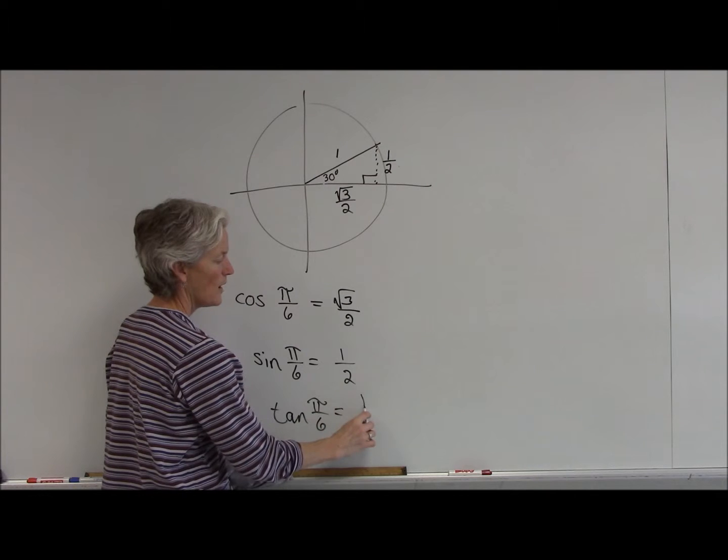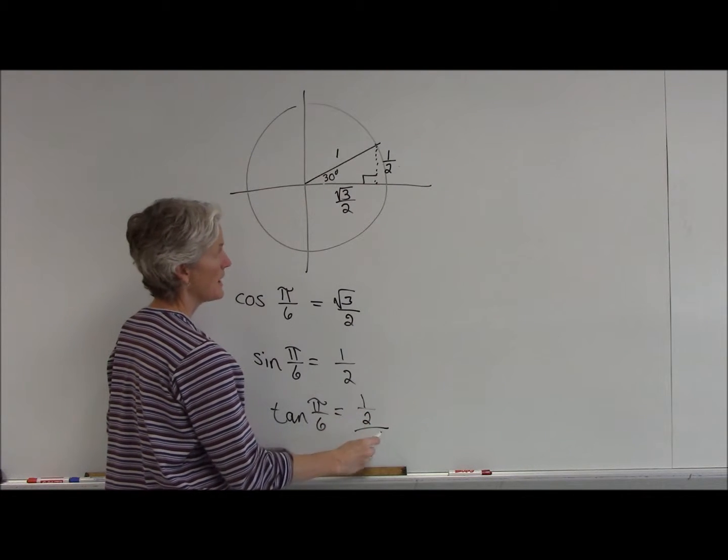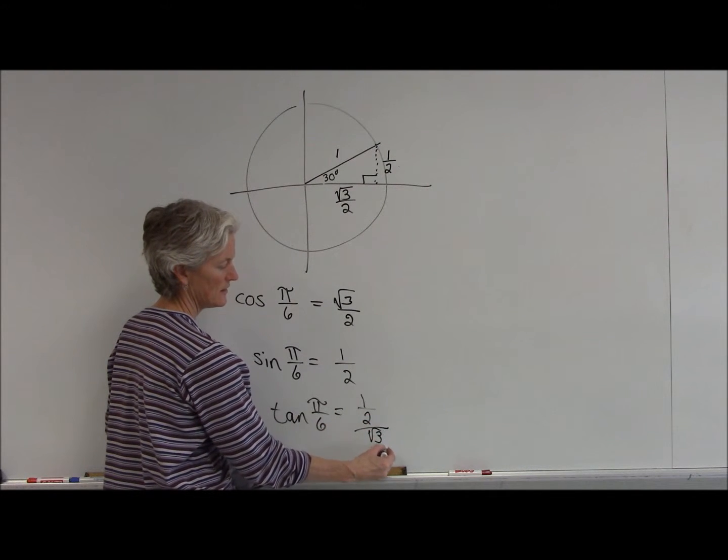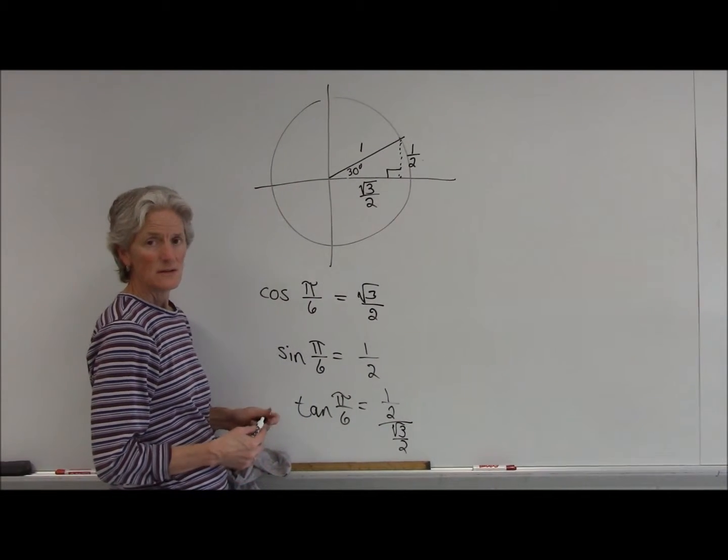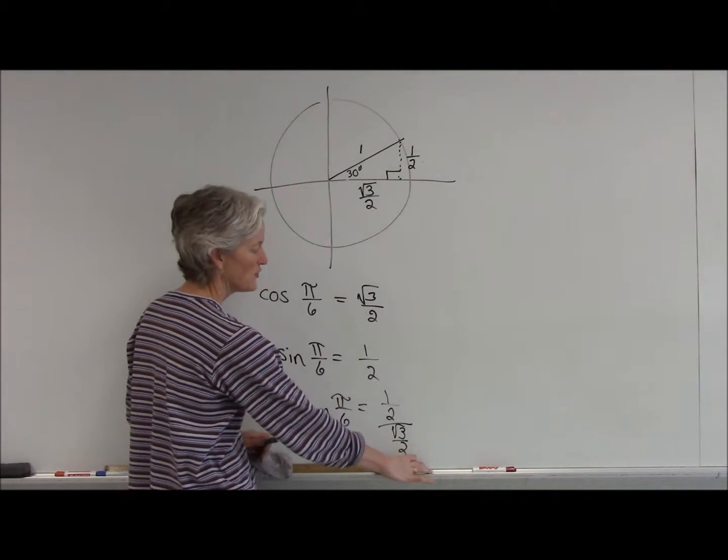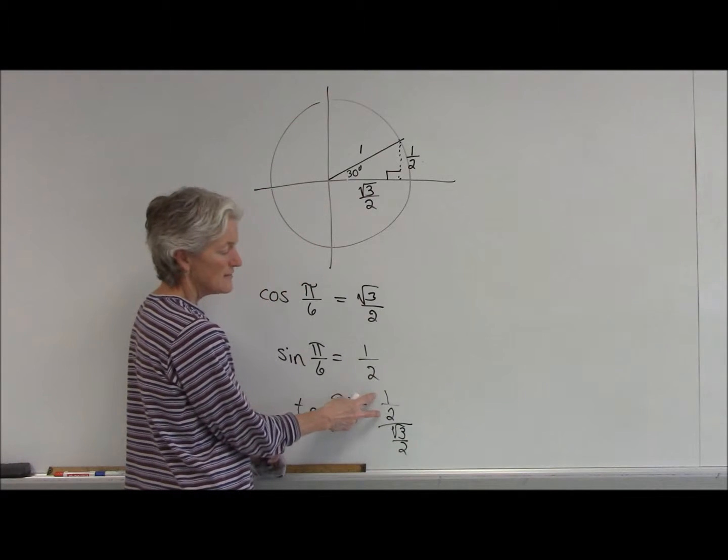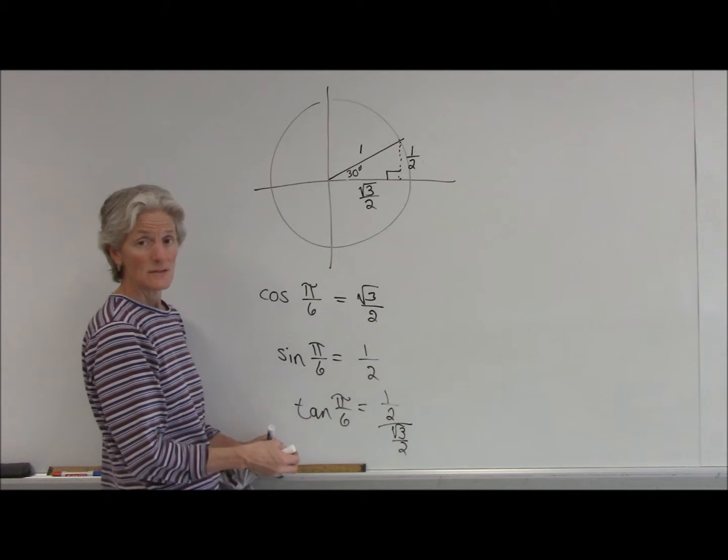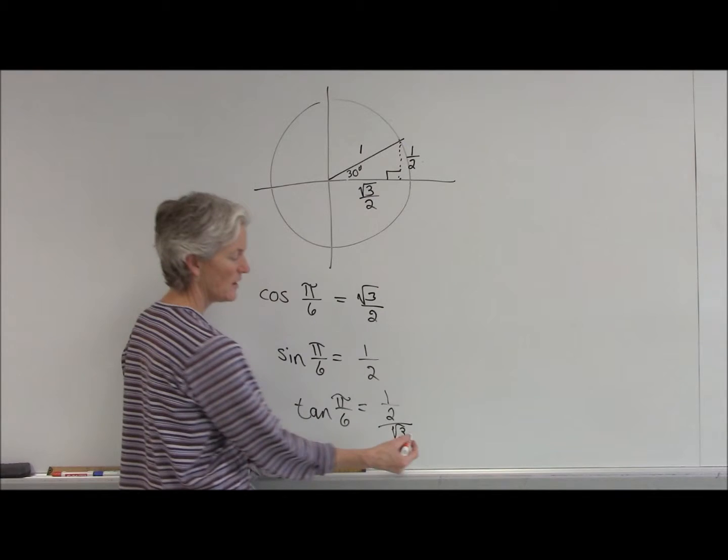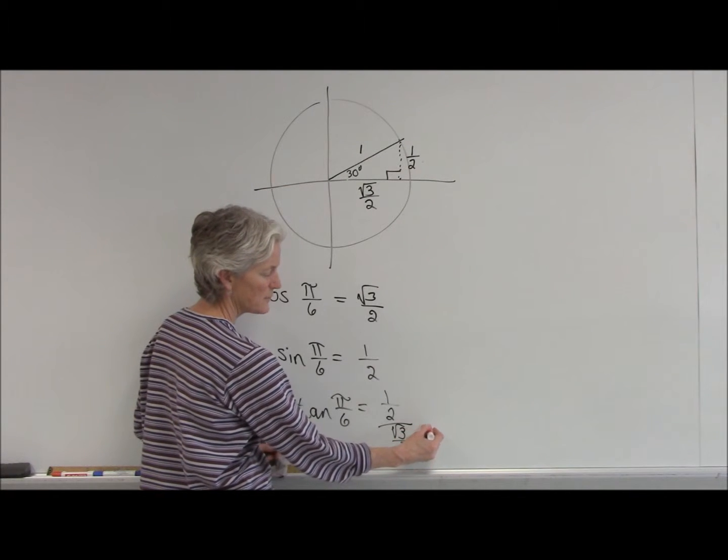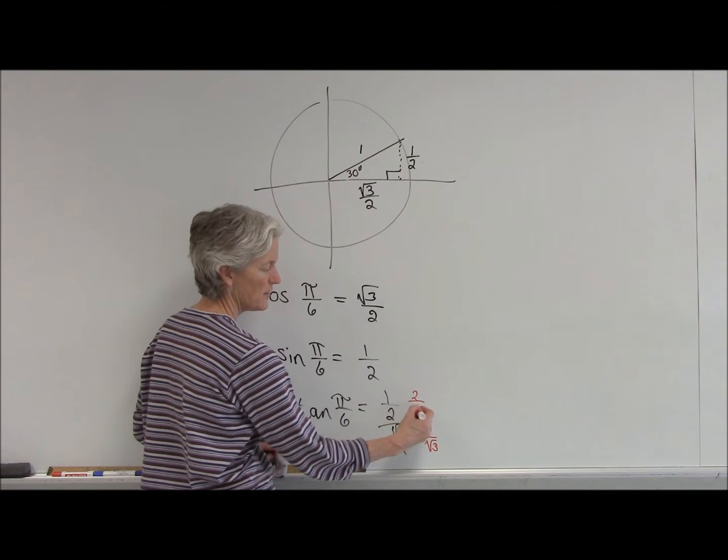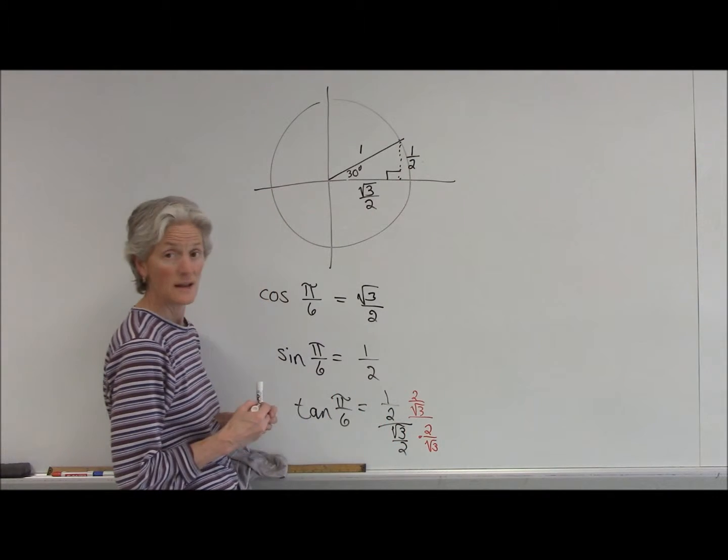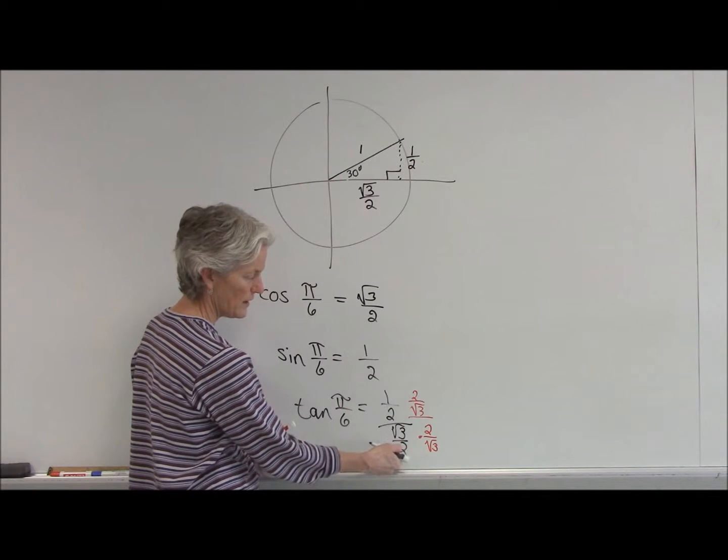Tan is my y value over my x value. Now, 1 half divided by... I don't want to leave a fraction in a fraction. You're really dividing fractions. You're multiplying by the reciprocal. What I like doing is just multiplying the denominator and the numerator by a fancy form of 1 that turns the denominator into a 1.